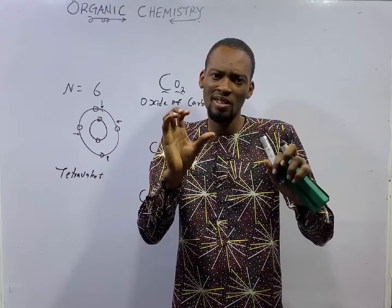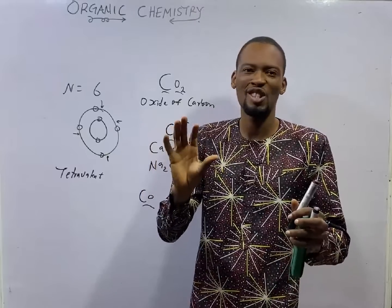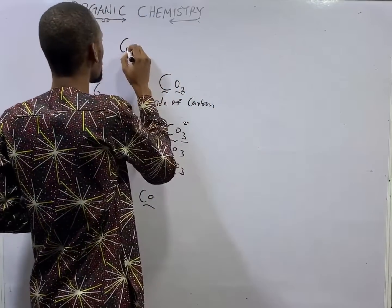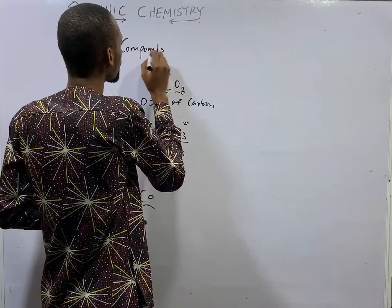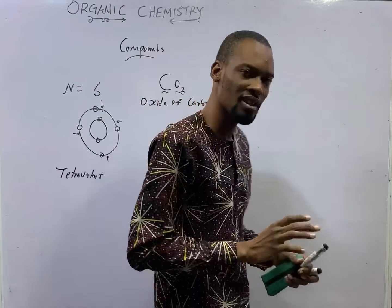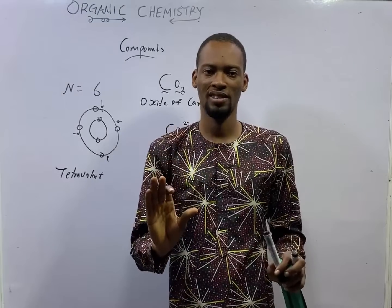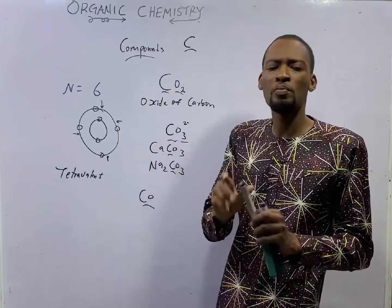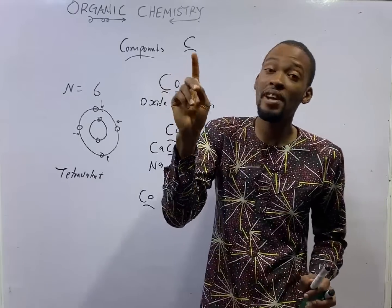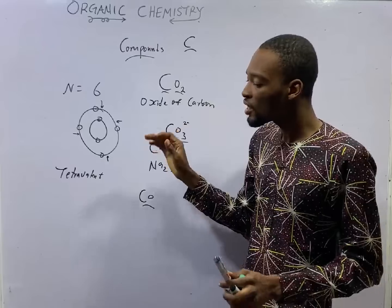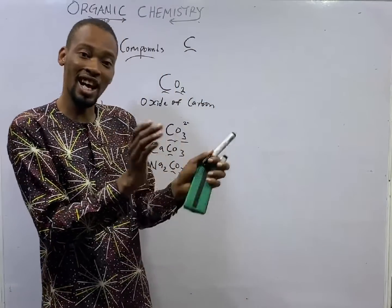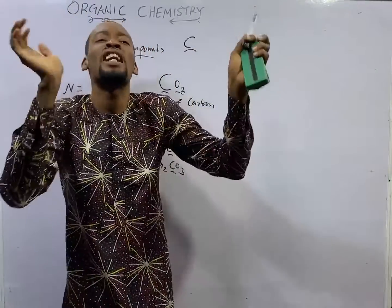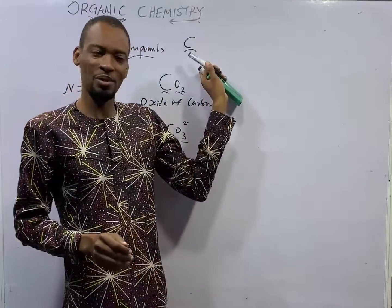There is a part of carbon that is studied specially, that is reserved. The compounds of carbon — when two or more elements combine chemically, we form compounds. The compounds of carbon alone are more than the compounds of every other element in the periodic table combined. If you bring out all the elements in the periodic table and their compounds, the compounds of carbon alone are more than all of them put together. You see that carbon is special.